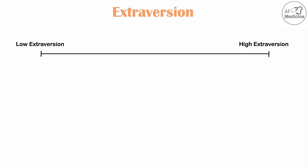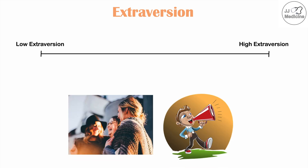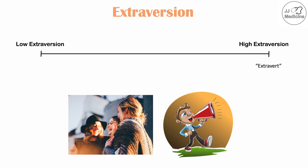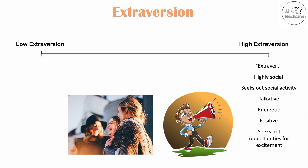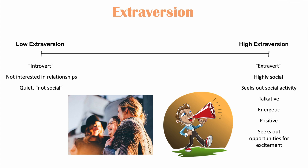The next trait is extroversion. An individual falls somewhere on the spectrum from low to high extroversion. High extroversion individuals — extroverts — are highly social, seek out social activity, are talkative, energetic, positive, and seek excitement. They may actually feel more energized from socializing. Low extroversion individuals — introverts — are not interested in socializing, tend to be quiet, avoid large crowds, and feel tired after socializing.